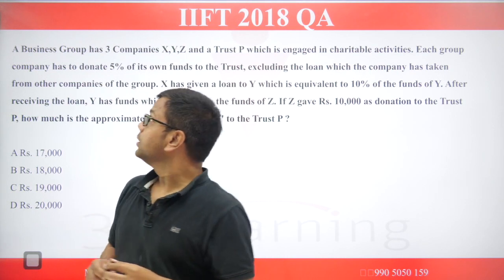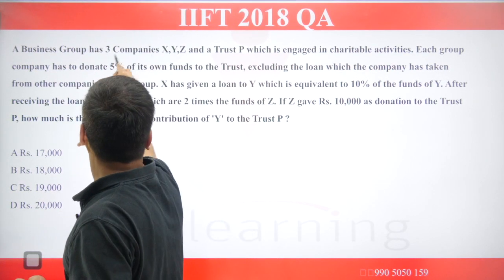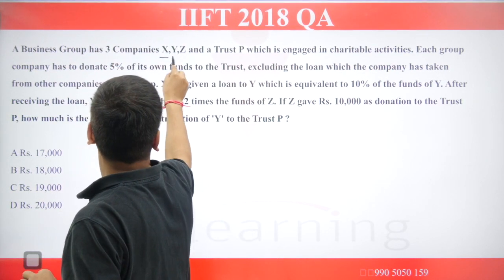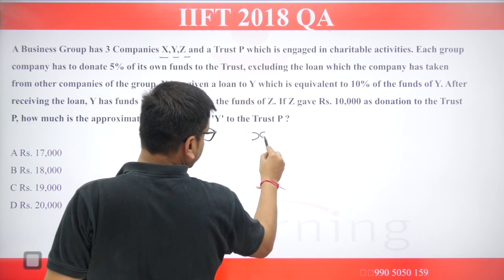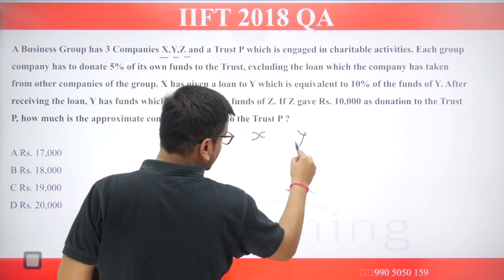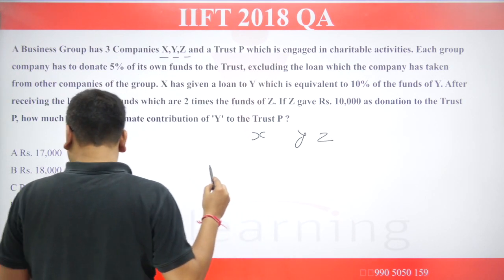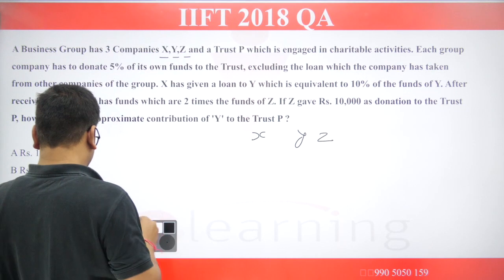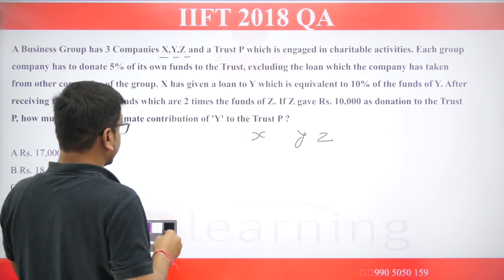In this question, a business group has three companies: X, Y, and G. We have three companies — X, Y, and G — and we need to solve this question accordingly.